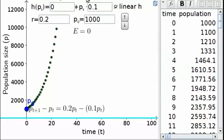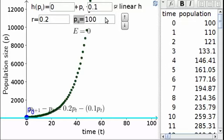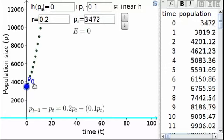The initial population size p0, now 1,000, is represented in three places. You can change it by typing a new value in the box, or by dragging the blue point with the mouse.